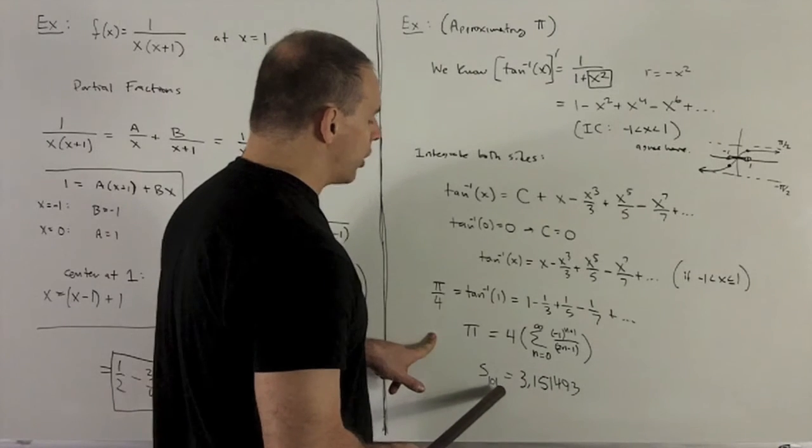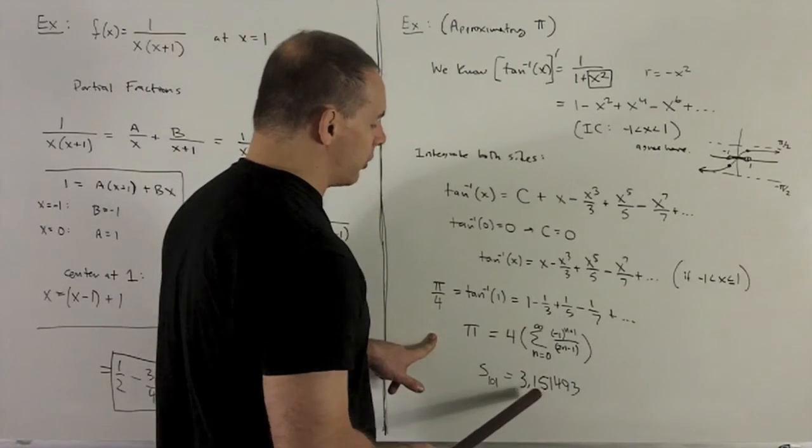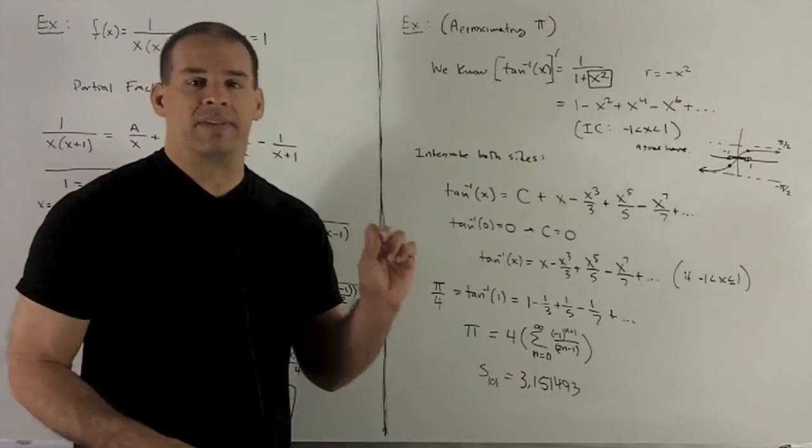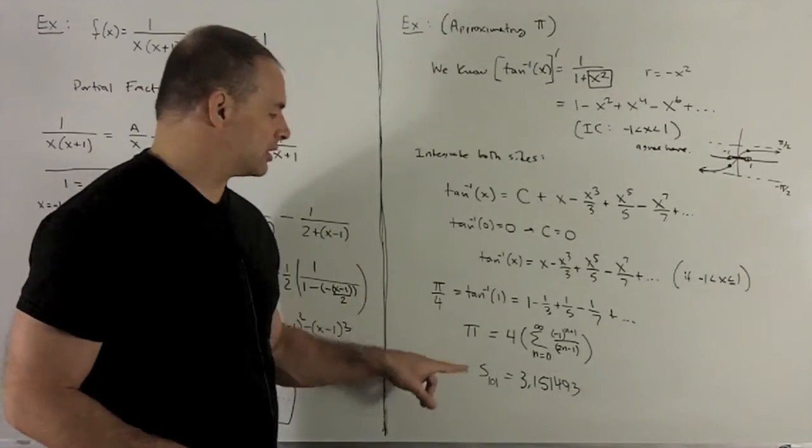if I have 100 terms, I'm not even getting my hundredths place in my expression for pi. So it's great that we even have an expression at all, but it gets there very slowly.